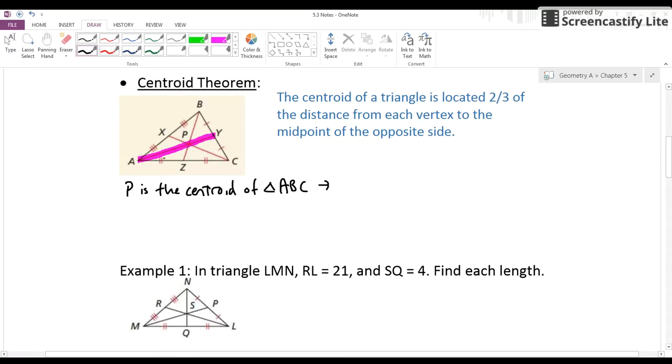The distance from the vertex to the centroid is two-thirds of the distance from the vertex to the midpoint. So basically, the distance AP is going to equal two-thirds of the whole median, AY. And again, this is your centroid theorem.